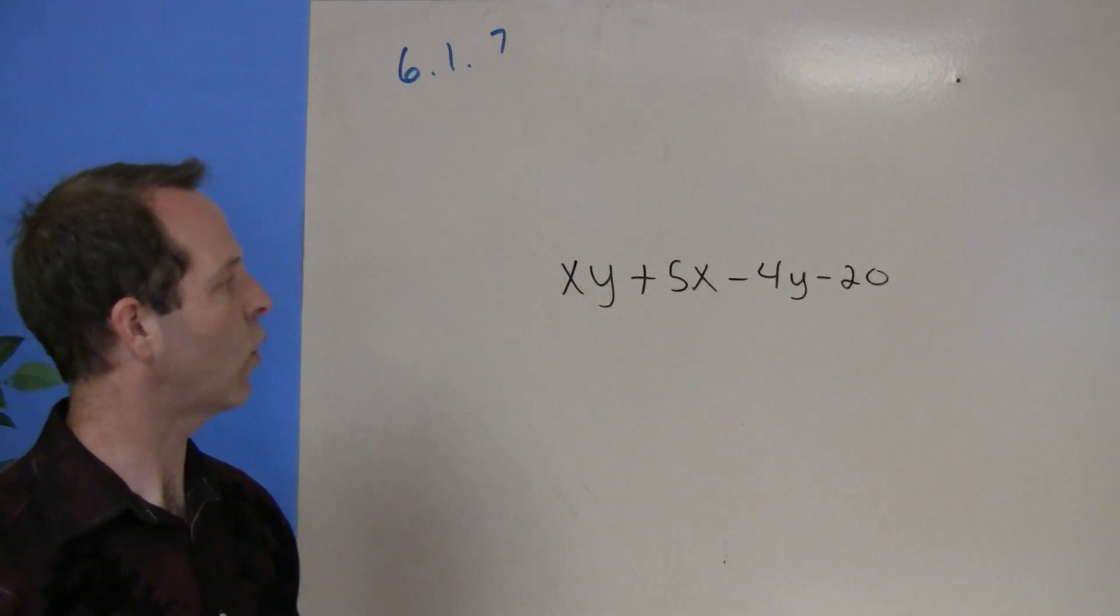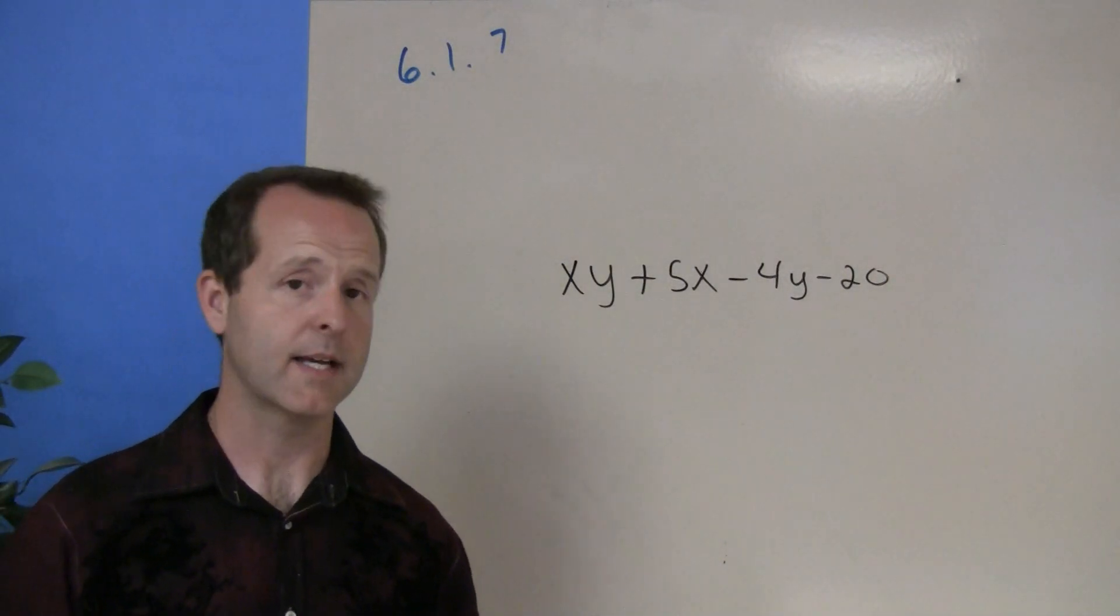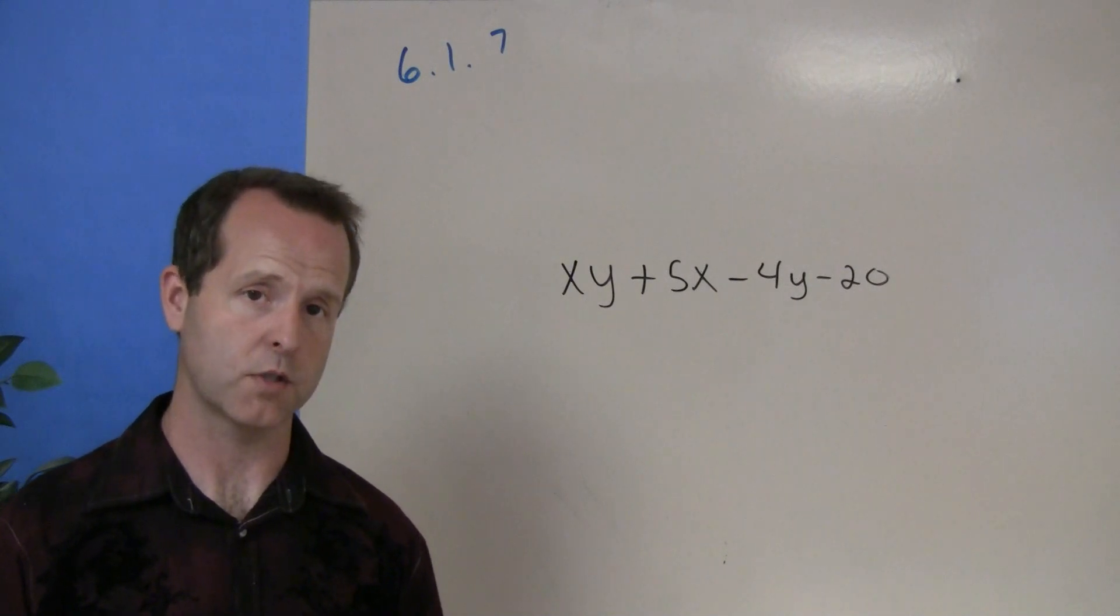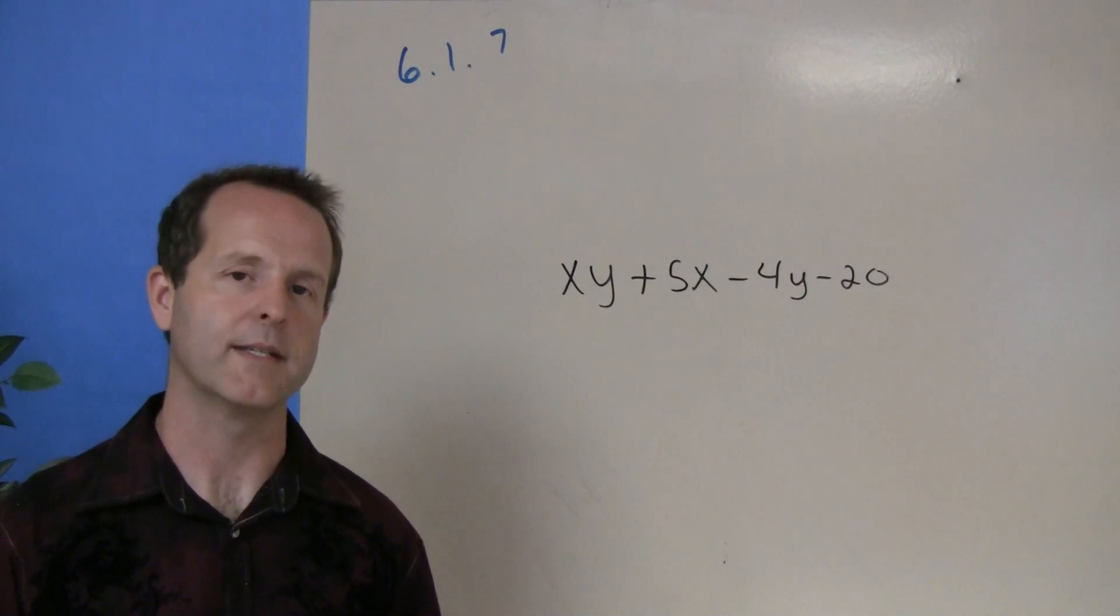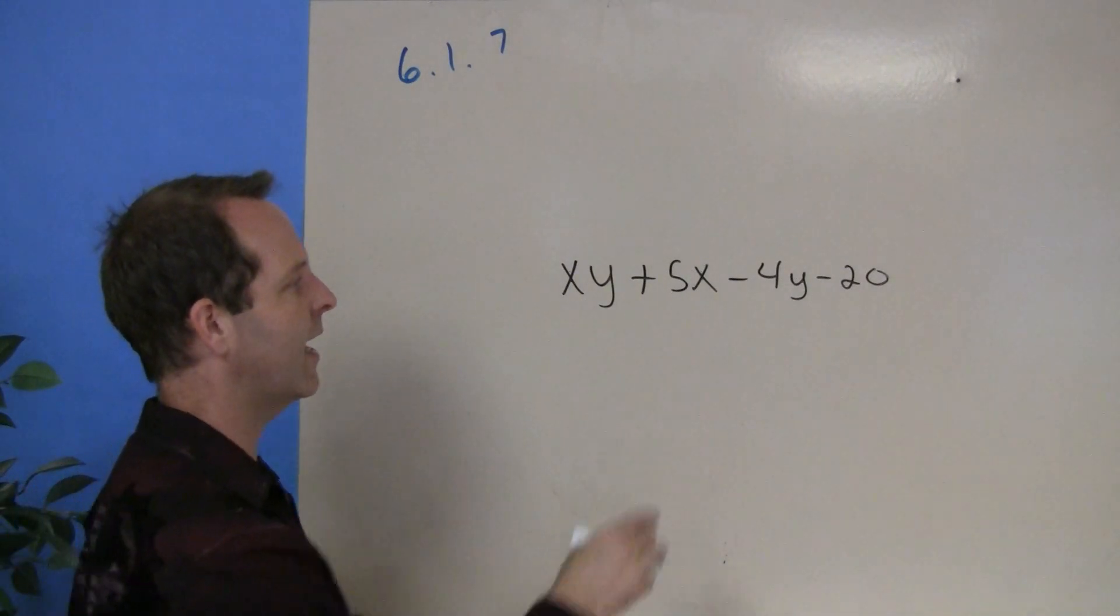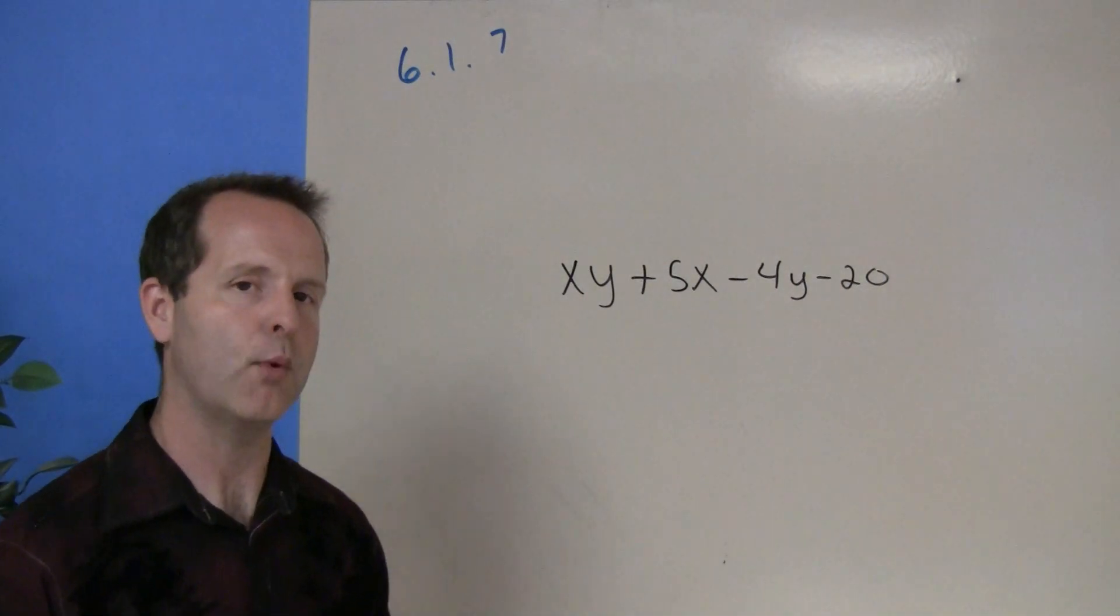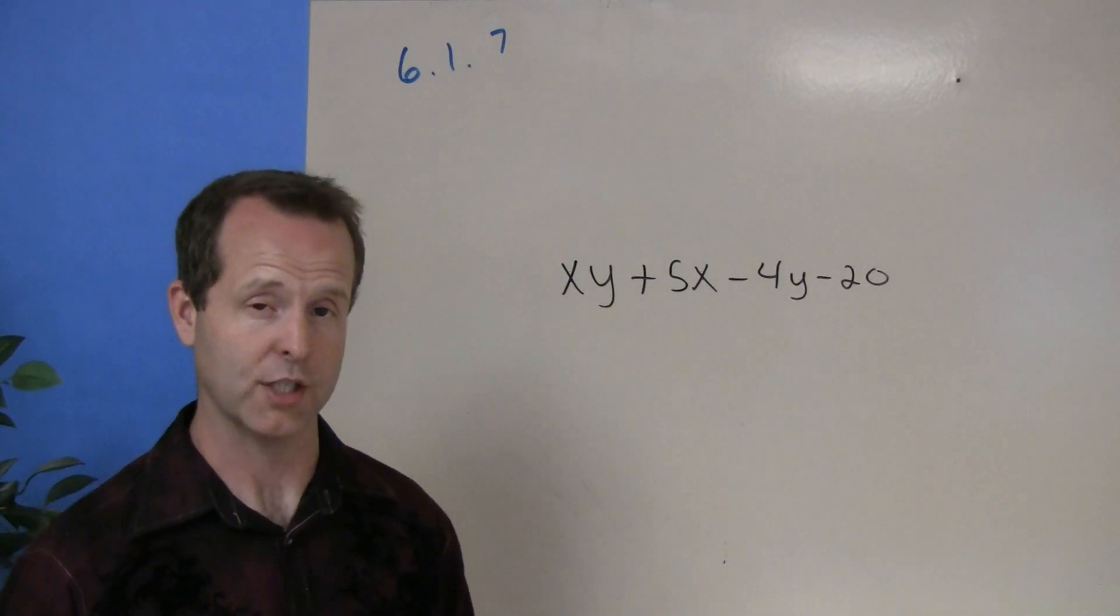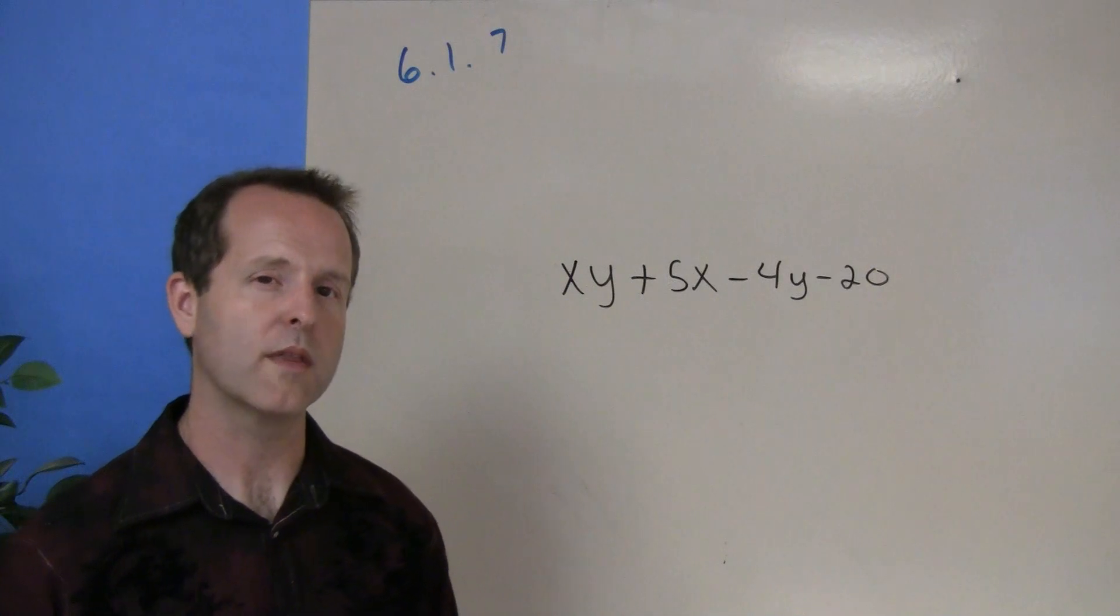xy plus 5x minus 4y minus 20. Doesn't appear to be anything that's common to each of those terms. So I'm going to use the grouping technique. However I notice that I have this negative that's kind of separating the first section from the second section. I'd rather in this case work with a positive.